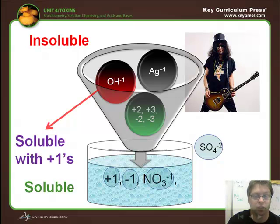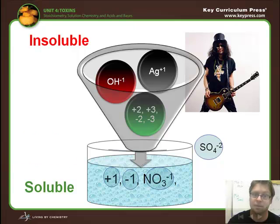Things that tend to be insoluble as well are things with larger charges. There's a larger attraction between them, so they tend to stick together most of the time: +2, +3, -2, -3 charges. If you see a larger charge, it probably will be insoluble. There are some gray areas, though.